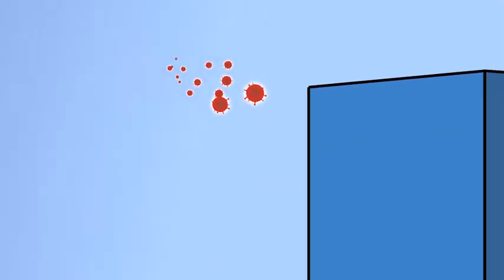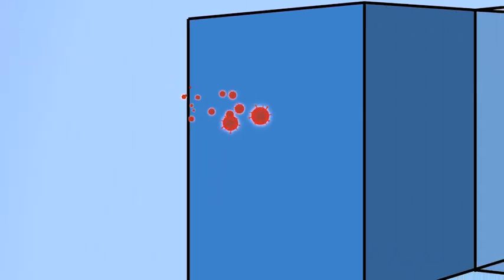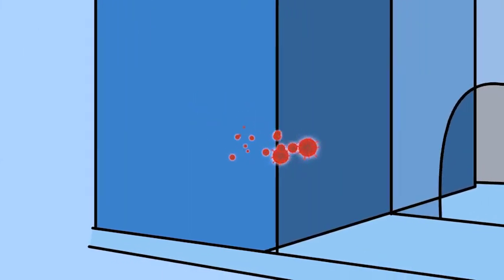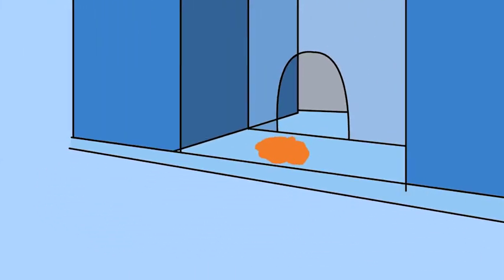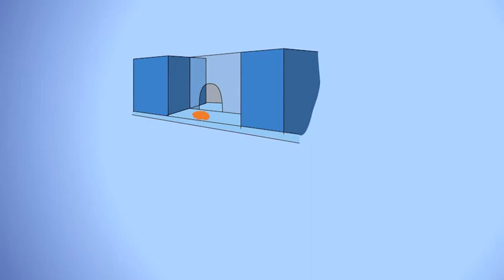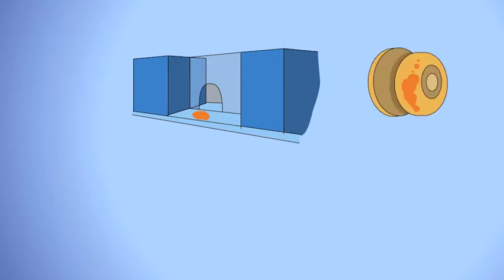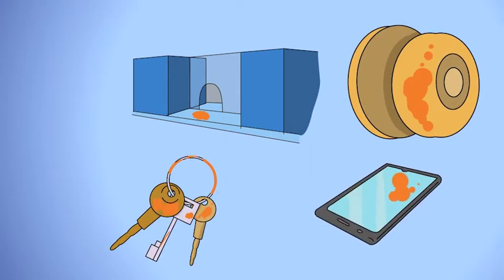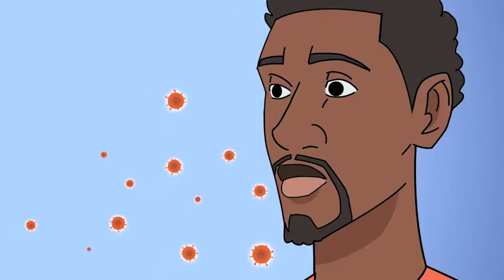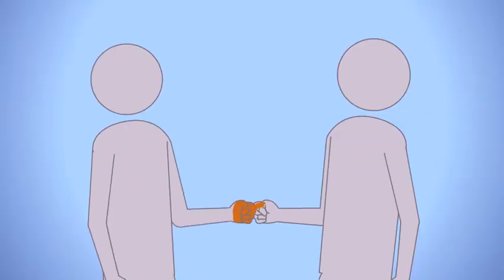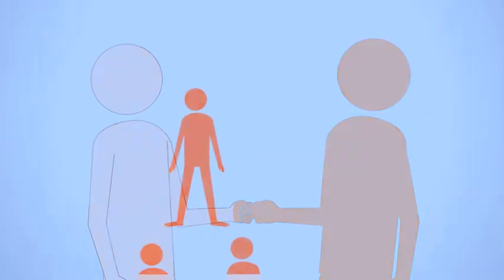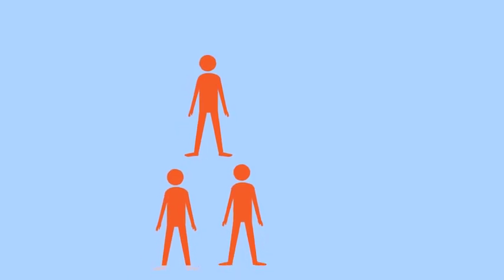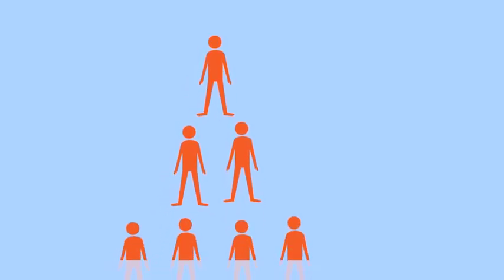The droplets from a sneeze, cough, or loud speech flow through the air before settling on surfaces like your countertops, tables, door knobs, keys, or your mobile phones. It can even be breathed in if you are close enough to a person who has the virus. The virus then waits for an opportunity to be passed on to the next person you come into contact with.